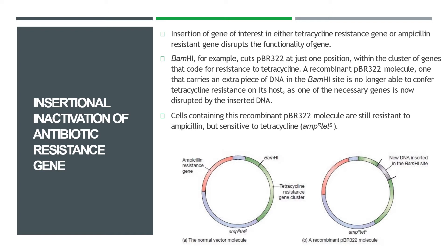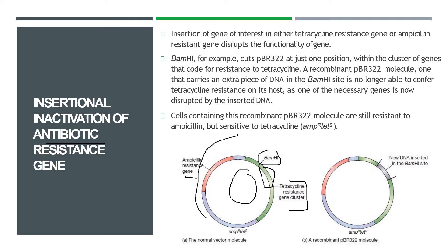Let's review the last part we covered. The topic is insertion and inactivation of antibiotic resistant genes. This is the plasmid PBR322 with selectable markers such as ampicillin-resistant gene and tetracycline-resistant gene. BamH1 is the restriction endonuclease enzyme acting here, so this part can be cut and a foreign DNA can be placed at this site.